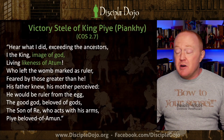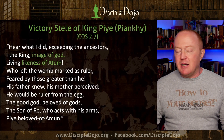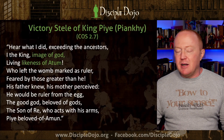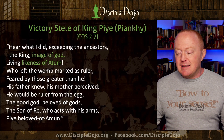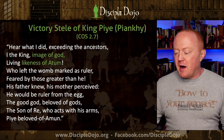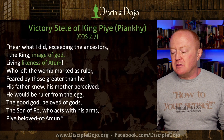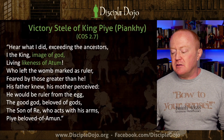Here is an example from the victory stela of King Piye — sometimes called Pianki. Here is an engraving from one of his monuments set up after a victory. He says: 'Hear what I did, exceeding the ancestors. I the king, image of God, living likeness of Atum' — one of the originating deified forces the Egyptians believed in — 'who left the womb marked as a ruler, feared by those greater than he. The son of Rei who acts with his arms, Pa, beloved of Amun.'